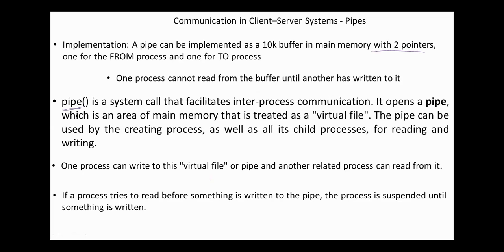A pipe is a system call that facilitates inter-process communication. It opens a pipe, which is an area of main memory treated as a virtual pipe. The pipe can be used by the creating process as well as child processes for reading and writing. If a process tries to read before something is written to the pipe, the process is suspended until something is written.